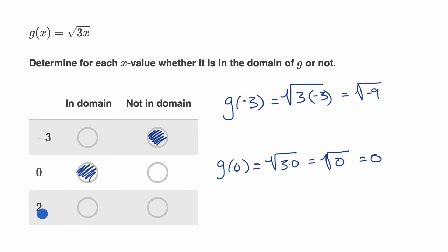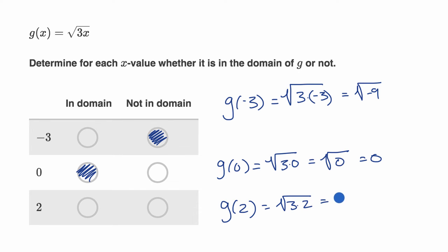What about x equals two? Does that give us a legitimate g of two? Well g of two is going to be equal to the square root of three times two, which is equal to the square root of six, which is a legitimate output. So x equals two is in the domain.